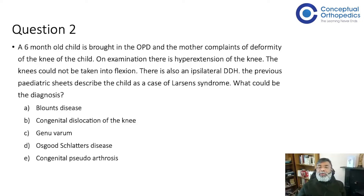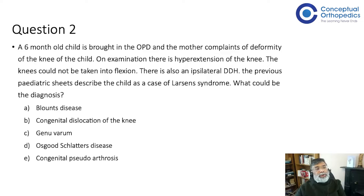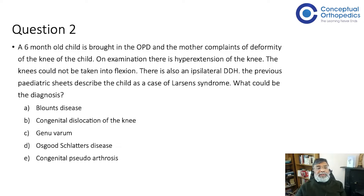Dr. Dimri adds: you covered most of the things. Since we are talking about different deformities around the lower limb, you should know that deformities can be in different planes — the coronal plane as varus or valgus, the sagittal plane as flexion or extension deformity, or the rotational plane as in-toeing and out-toeing. You should also know some causes of these.